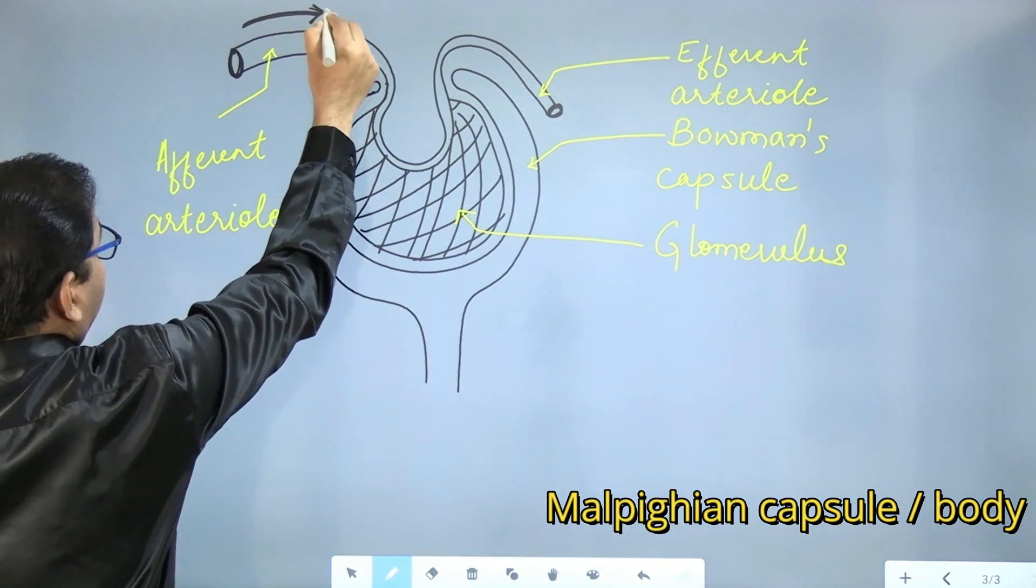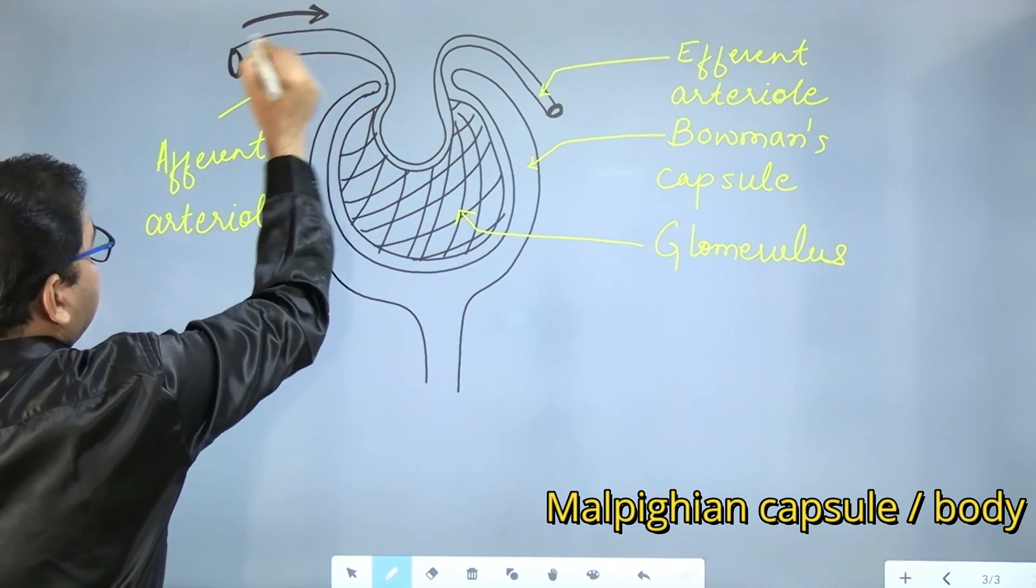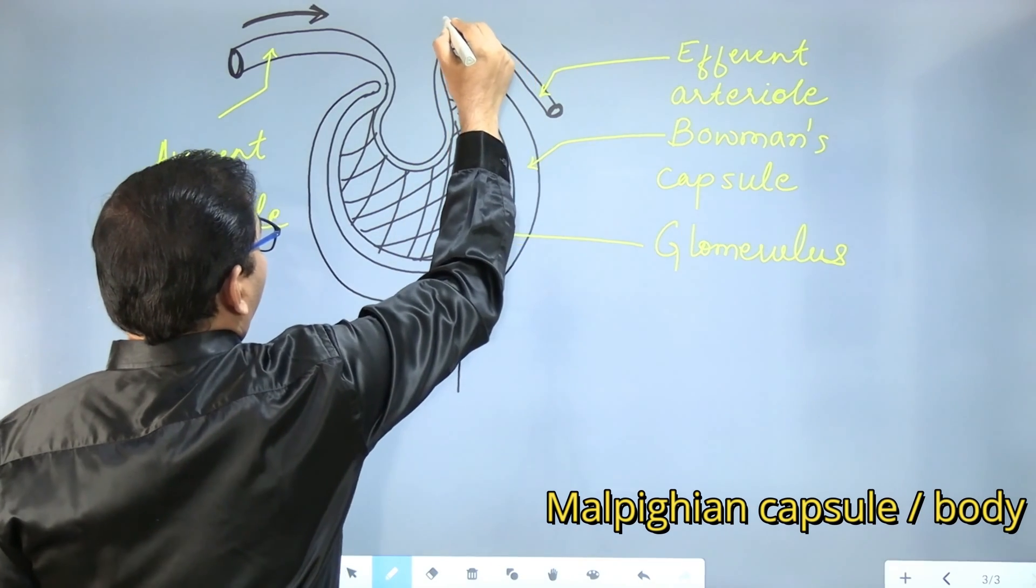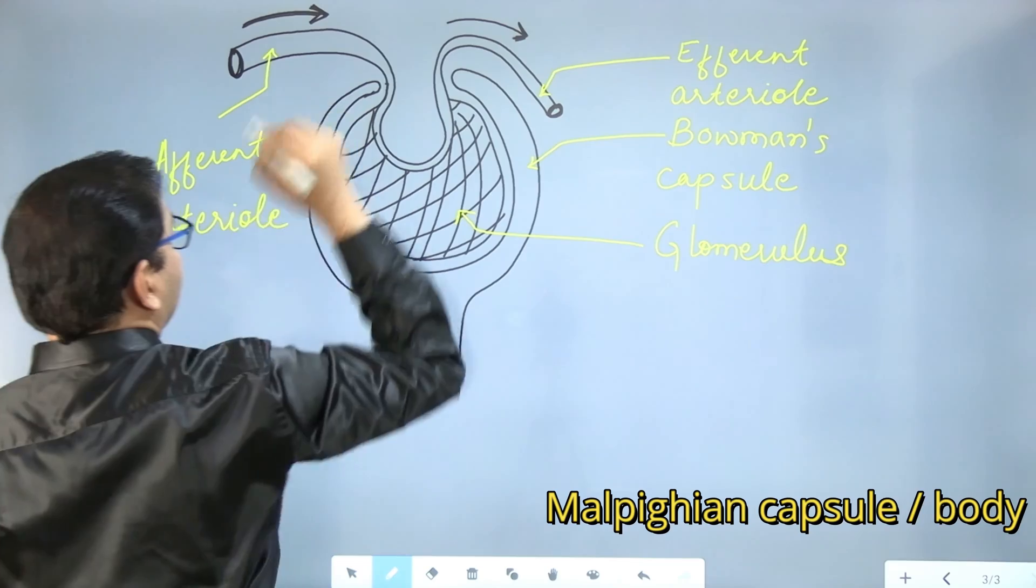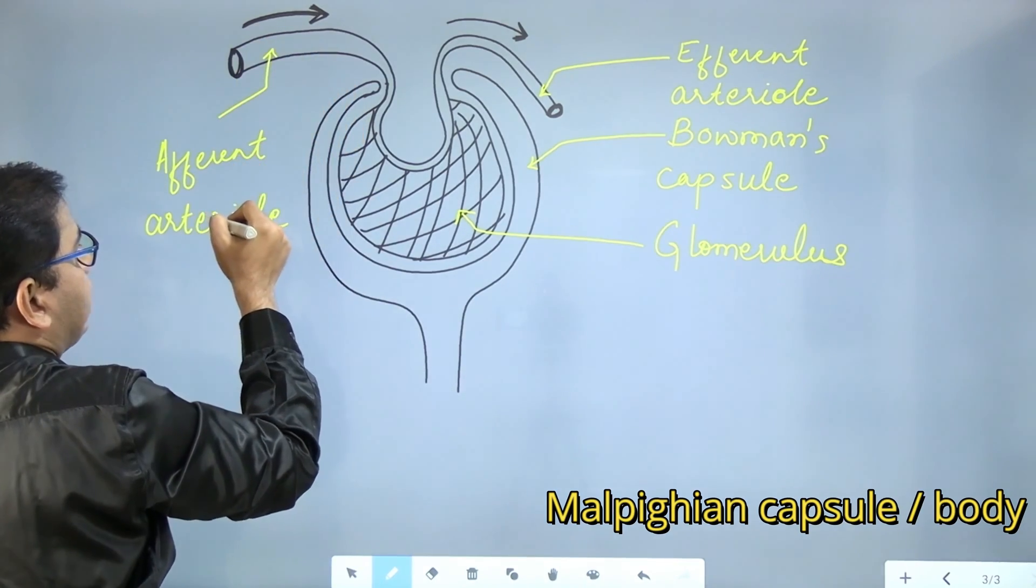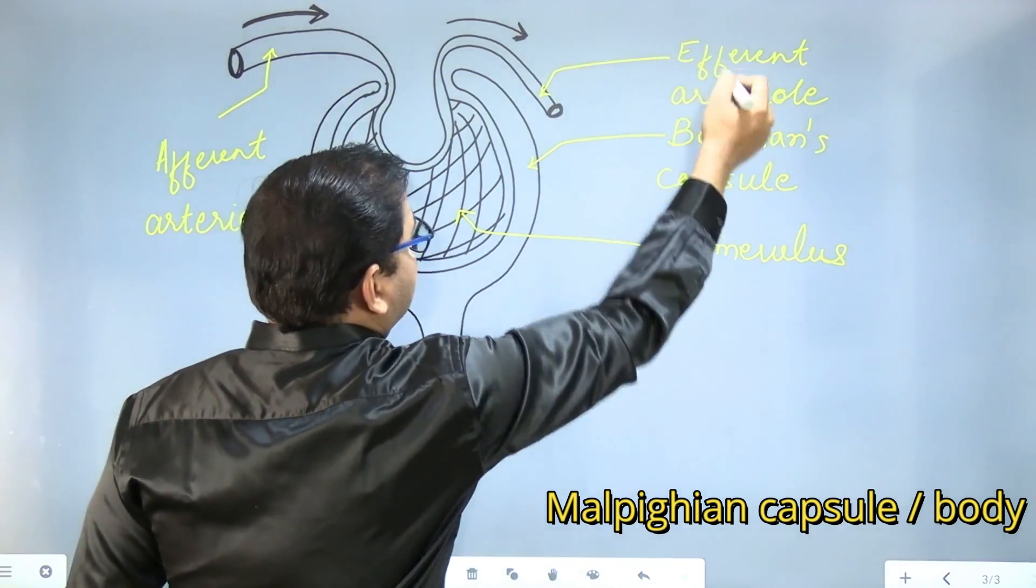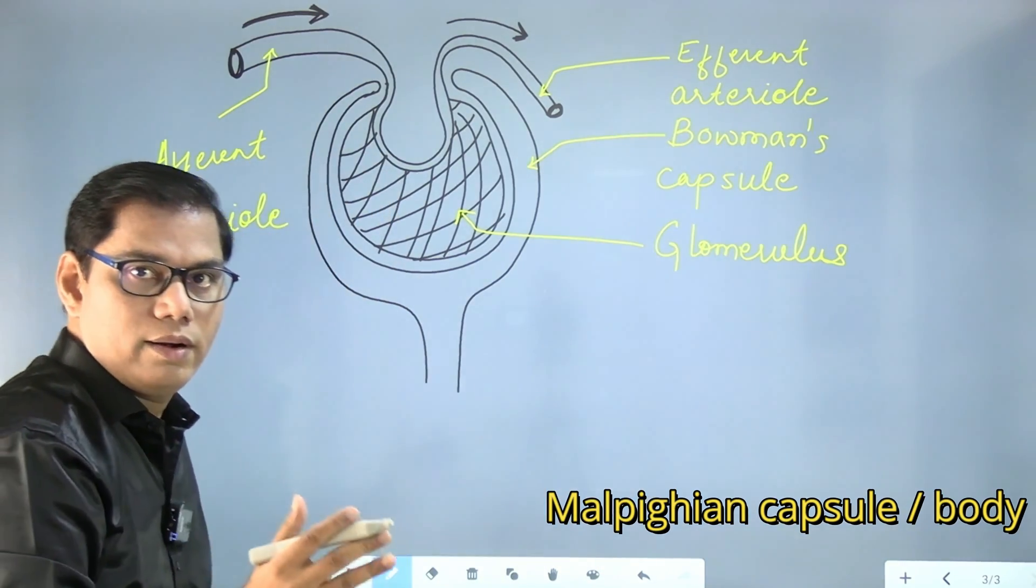Please don't forget to put this arrow which indicates the direction of the flow of this fluid. It comes inside through afferent arteriole and goes outside through efferent arteriole.